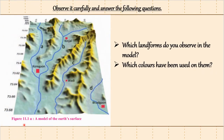A model of the relief in an area is shown in figure 11.1a — a model of the earth surface — on textbook page 72. The first question: which landforms do you observe in the model? The landforms observed are hill ranges and flatlands — in yellow color that is hill ranges and blue color is flatland. Next question: which colors have been used on them? The colors used are yellow for hill ranges and blue for flatland.